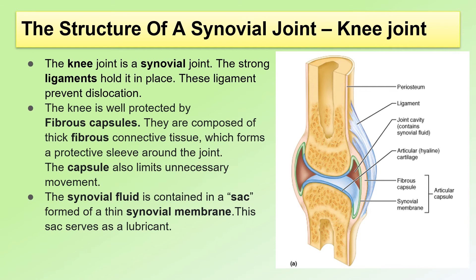Now, let's look at the structure of a synovial joint. I have taken the knee joint as reference. The knee joint is a synovial joint. In this joint, the strong ligaments hold it in place. These ligaments prevent dislocation. The knee is also well protected by fibrous capsules. They are composed of thick fibrous connective tissue which form a protective sleeve around the joint. This is the fibrous capsule. This capsule also limits unnecessary movement. The synovial fluid is contained in a sac formed of a thin synovial membrane. This fluid serves as a lubricant. The fibrous capsule and the synovial membrane together are known as the articular capsule.